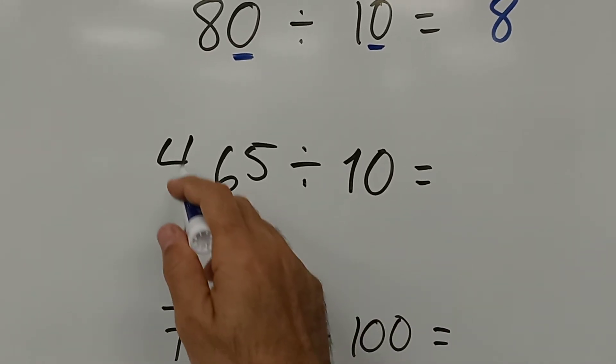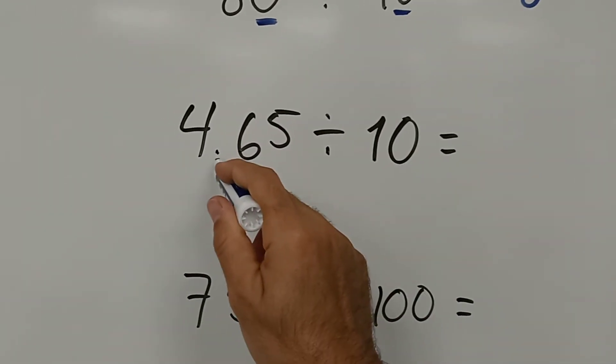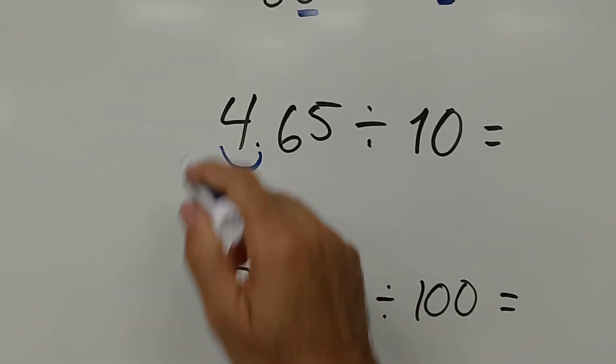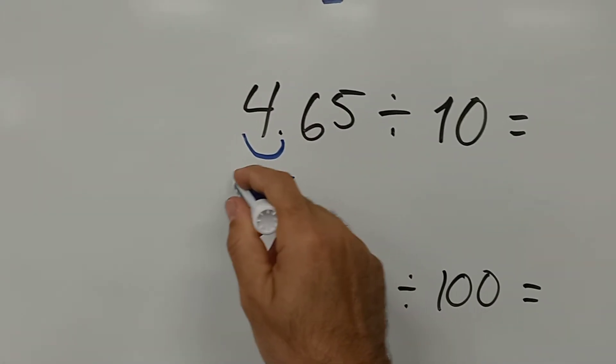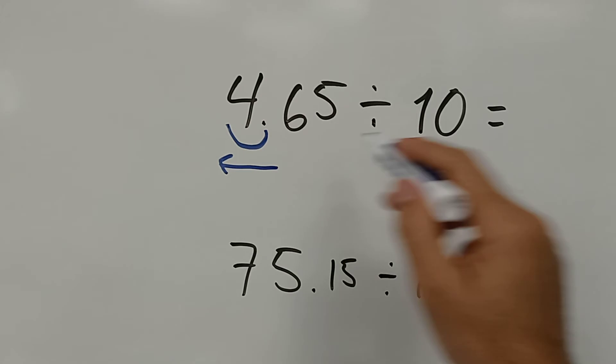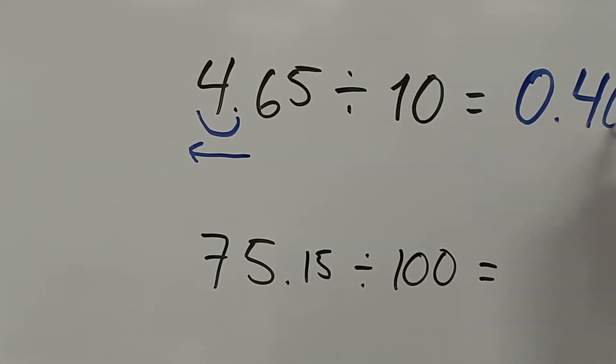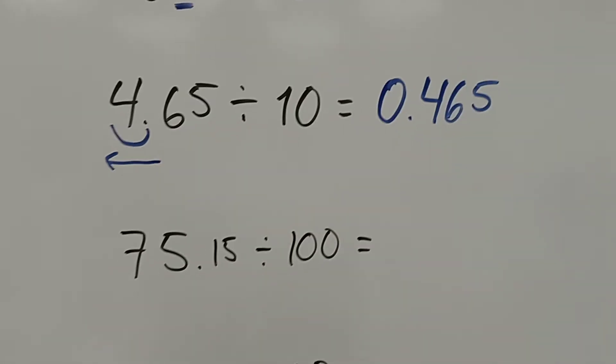Now in this case, 4.65 divided by 10, the point now moves to the left. You move over there. So this one will be 0.465.